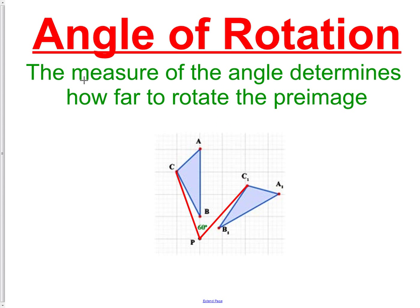Next is the angle of rotation, and that's the measure of the angle that determines how far to rotate the pre-image, or how far we're rotating it. Here we have the red lines and it's being rotated 90 degrees. Fairly straightforward.